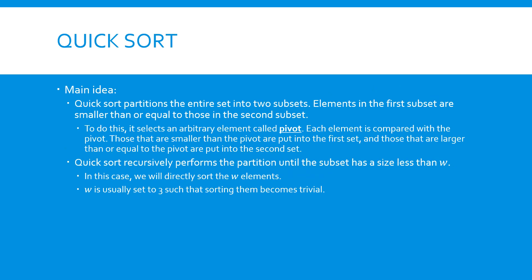Let's take a look at the main idea of quicksort. Given a list of elements to sort, it first tries to select an element from the list, hereafter referred to as the pivot. The selection of the pivot can be arbitrary. Then it will divide the list into two subsets: one contains all elements that are smaller than or equal to the pivot, and the other contains all elements that are larger than the pivot. In this case, the pivot is put into the correct location of the sorted list. Next, we can compare each element with the pivot and partition the elements based on the comparison results. After the partition, the algorithm will recursively partition each subset until the sizes of the subsets drop below a threshold, w.